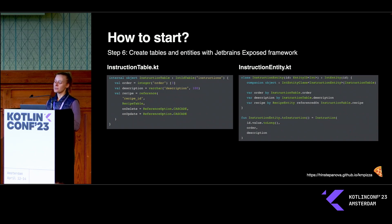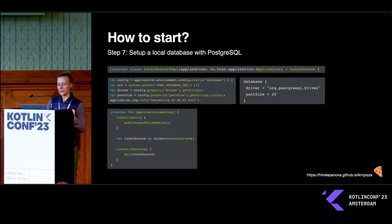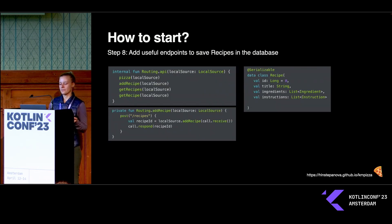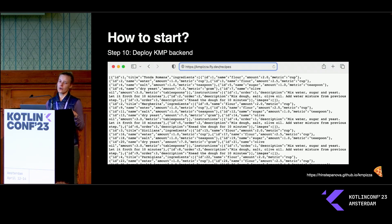The next challenge was preparing a database to store all the recipes. I went with JetBrains Exposed framework coupled with PostgreSQL — I added the dependencies, created the necessary tables and entities. This was probably the most challenging part, as I always found database management quite complicated. Then I created a local source implementation, connected it to the REST API, and used Koin for injection — it was a good surprise that Koin works not only in KMM apps but also on the backend. I added more endpoints like get recipes and add recipe, implemented image hosting with Amazon Web Services, and finally deployed the backend first on Heroku, then on Fly.io.